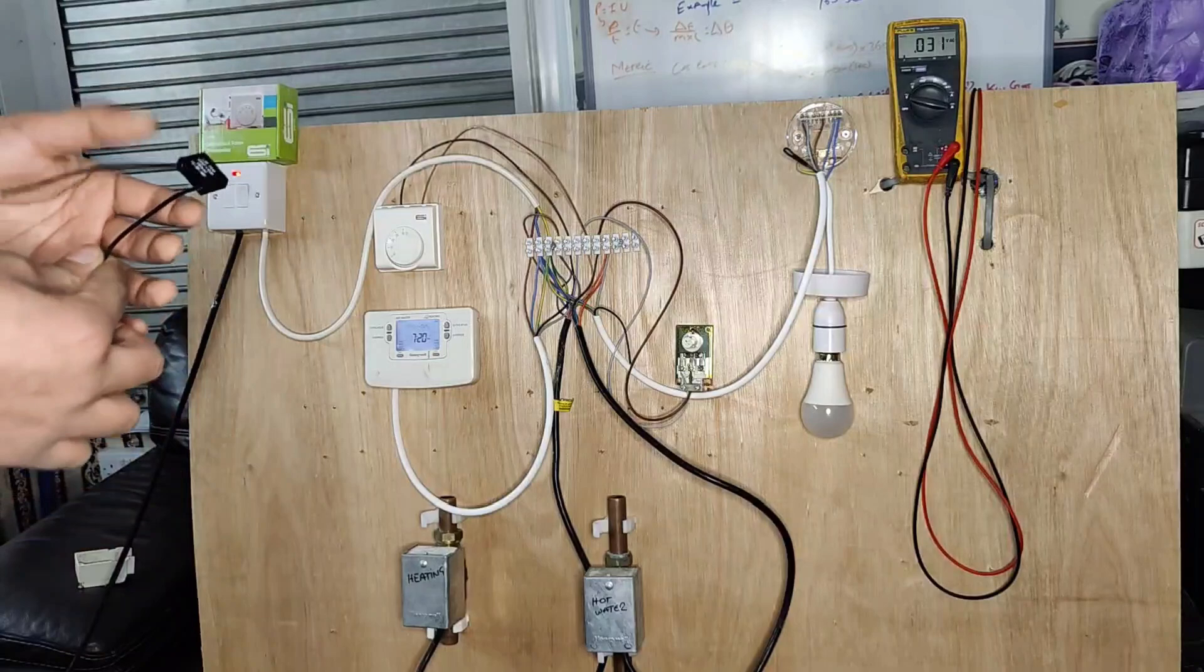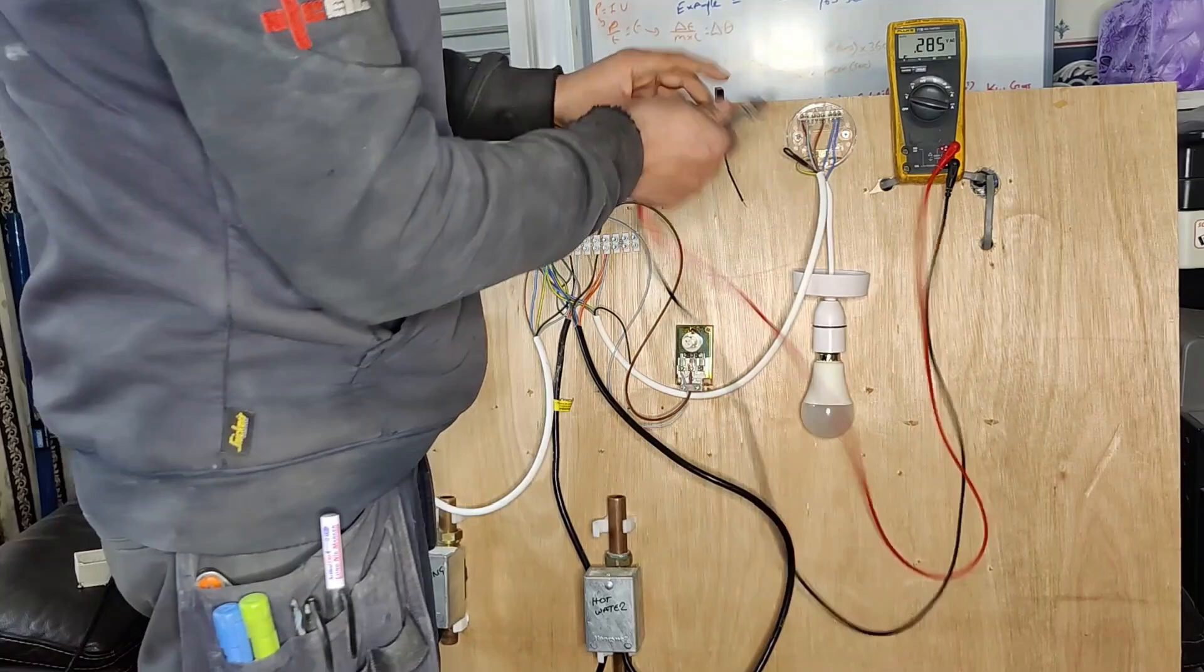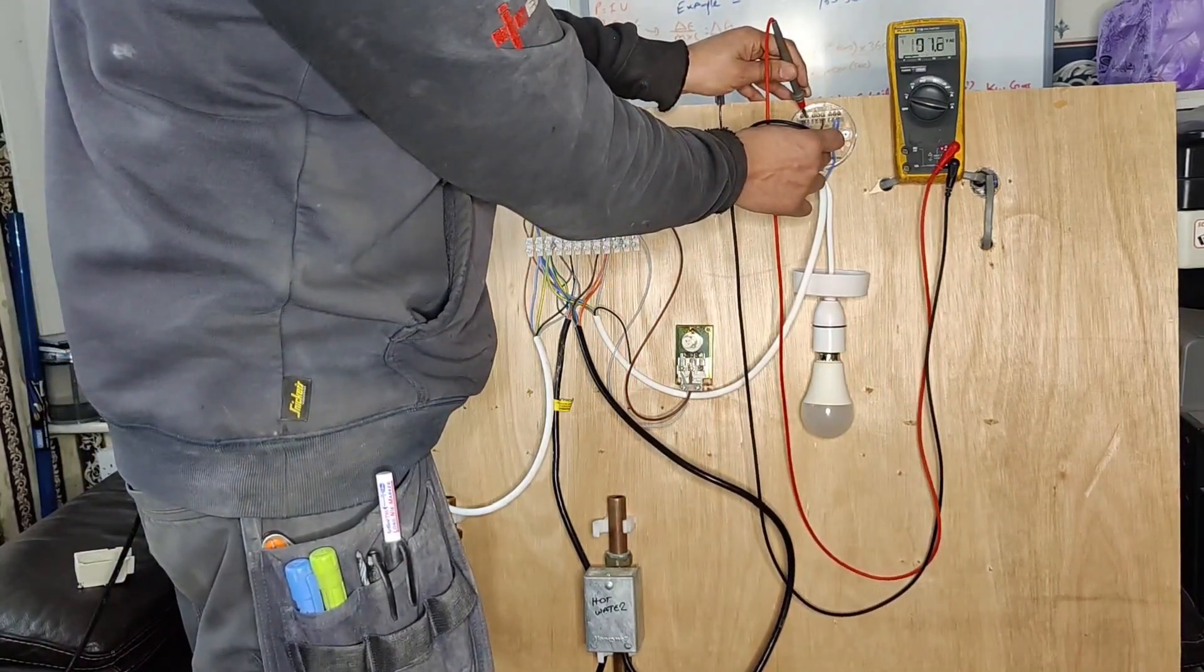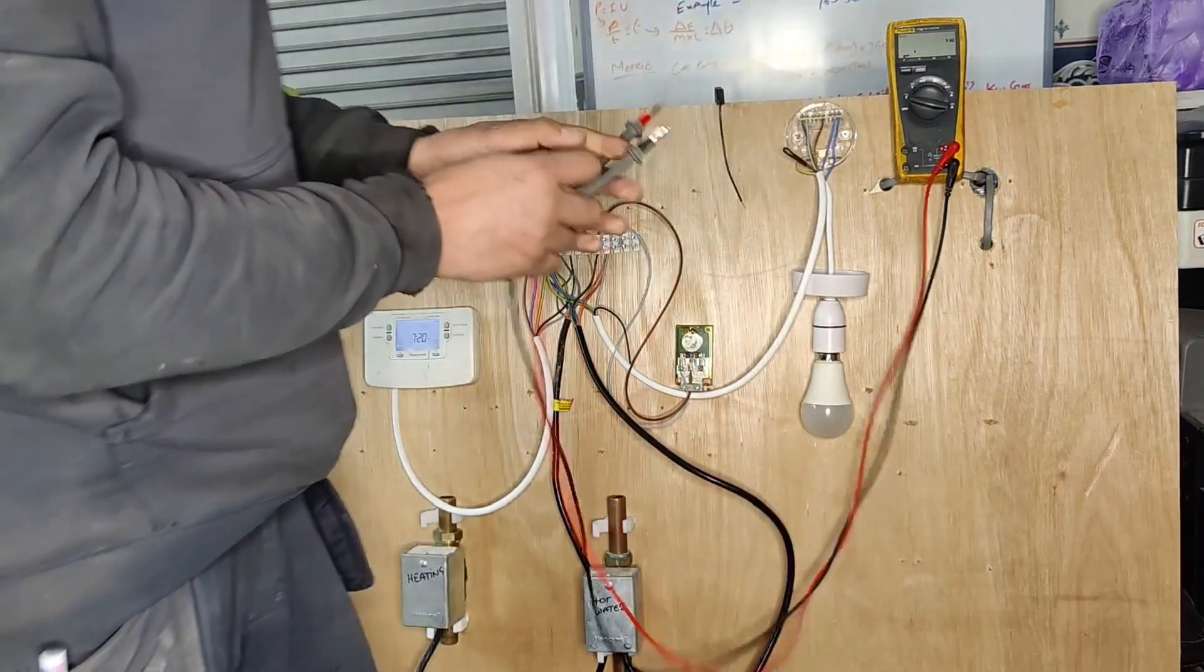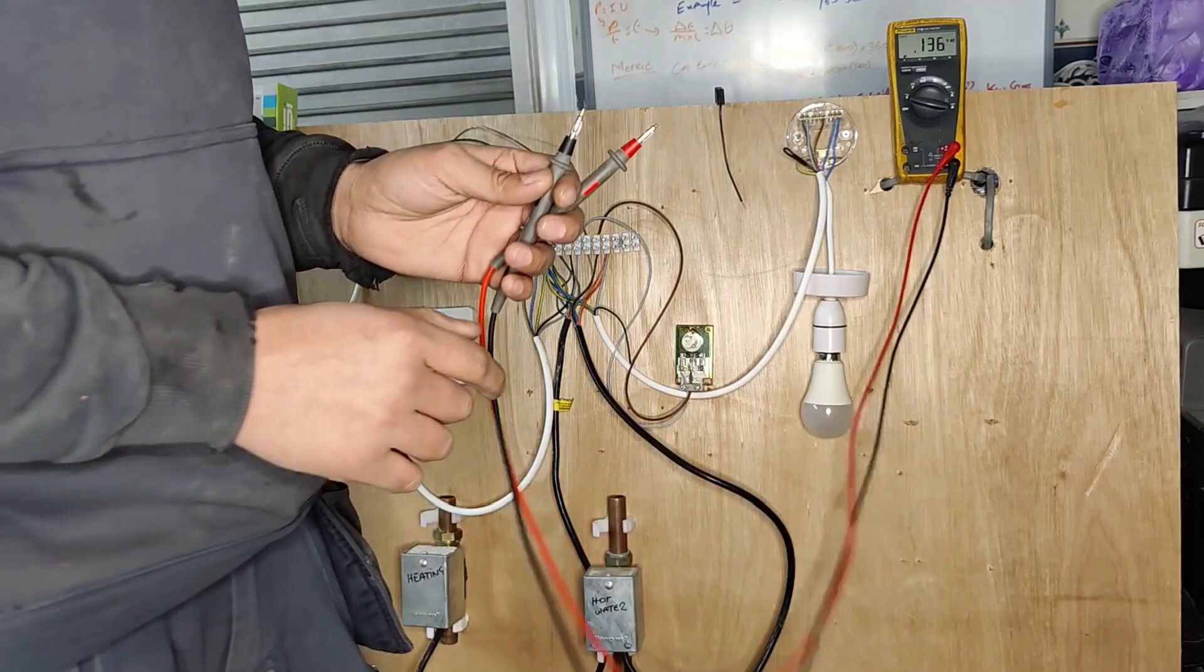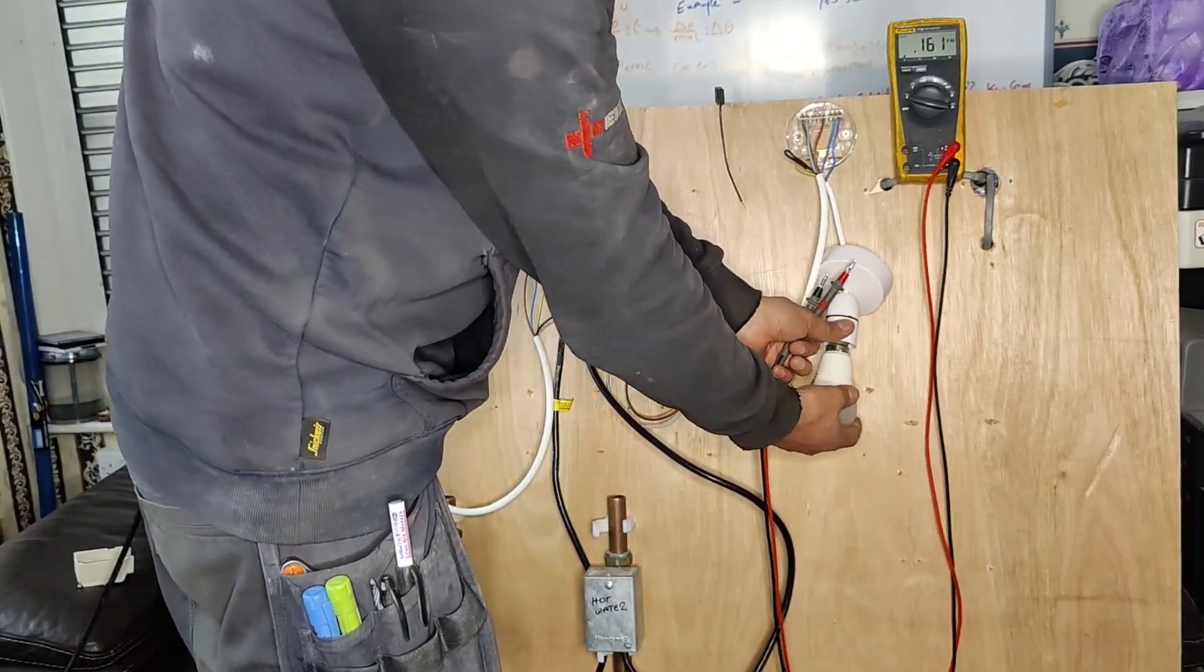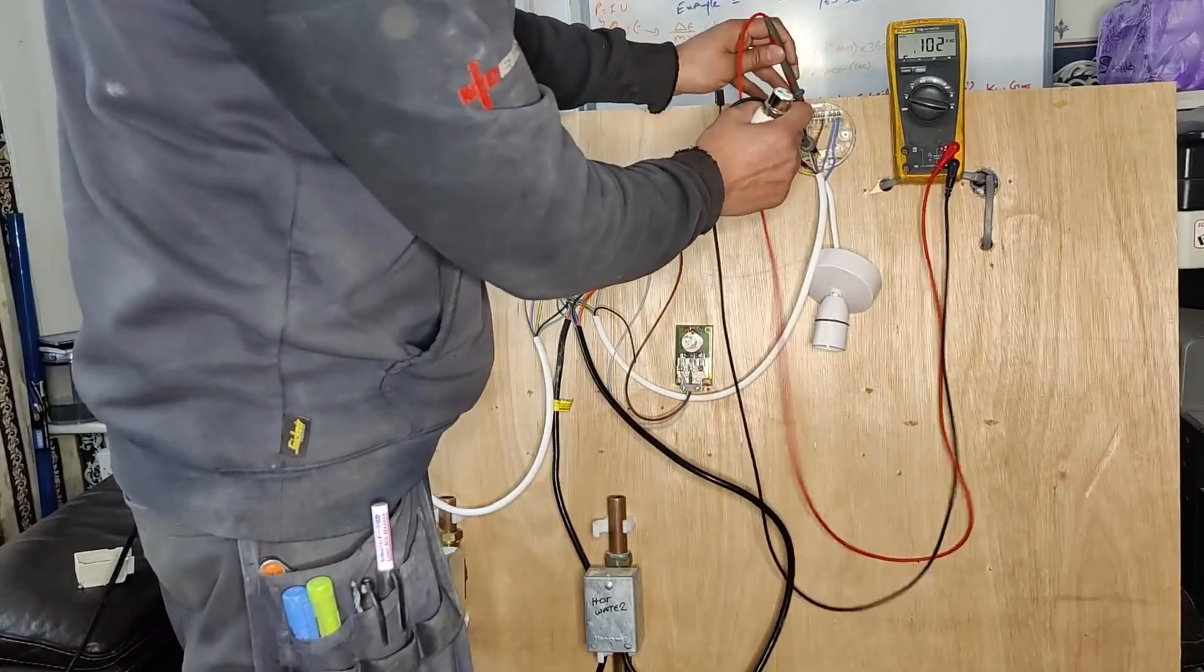The voltage was around 90 volts earlier, let's double check it to see if it's reduced now. Around 97, 96, still the same. One thing I can guarantee you is that if we remove this bulb, this voltage will reduce. I've removed the bulb, let's see: 36 volts AC, 35 volts AC.